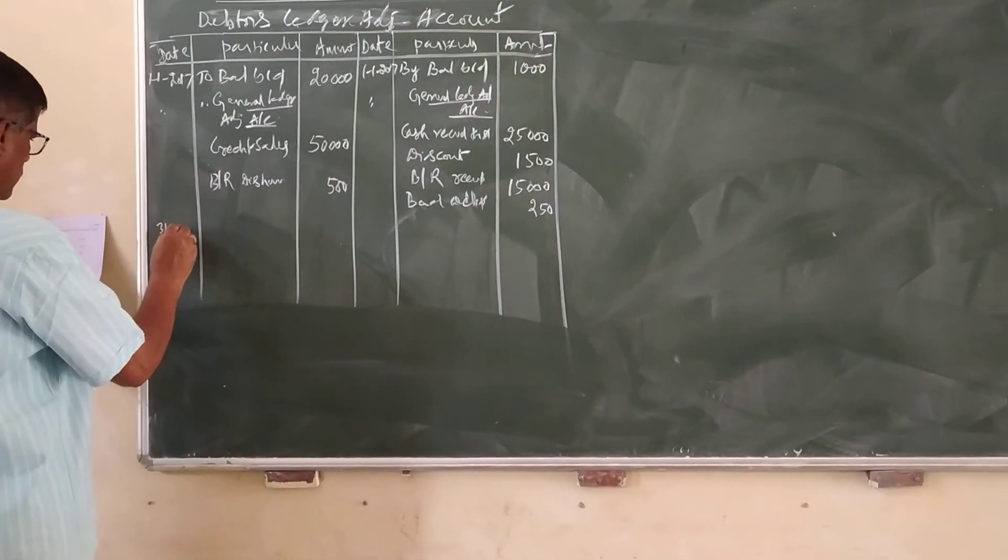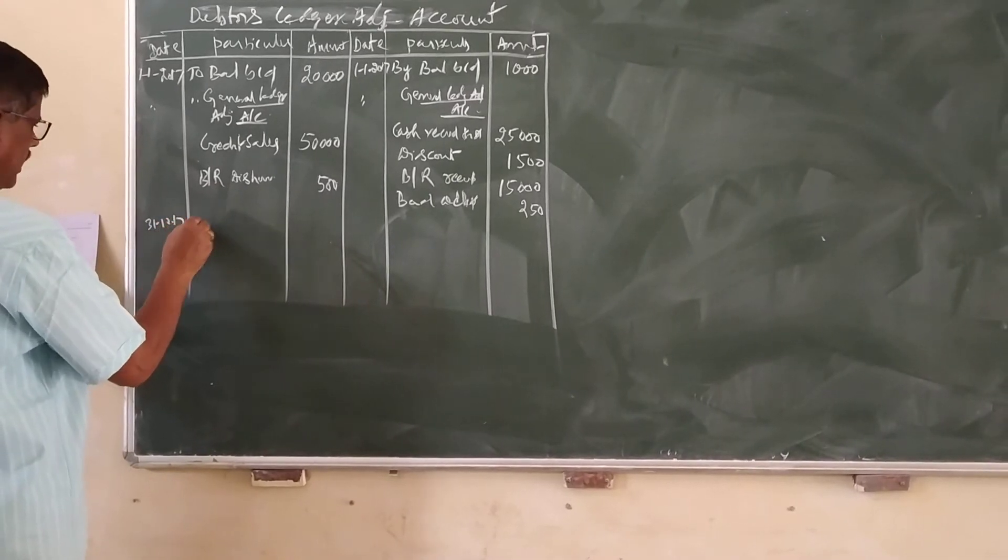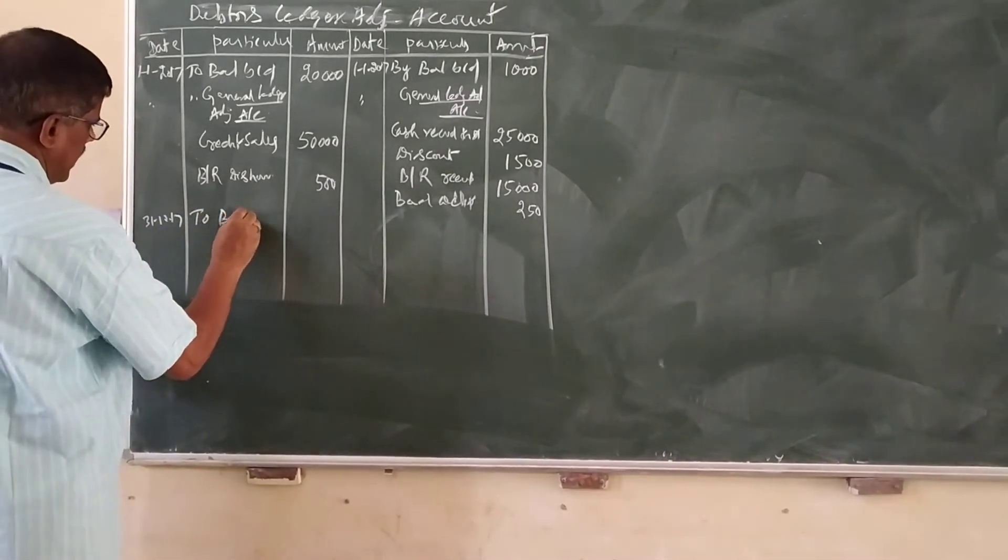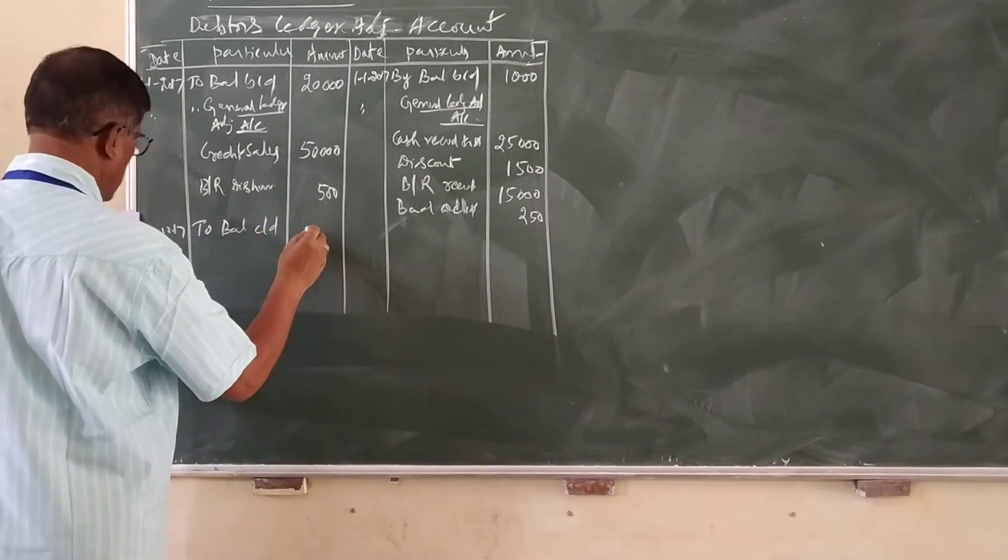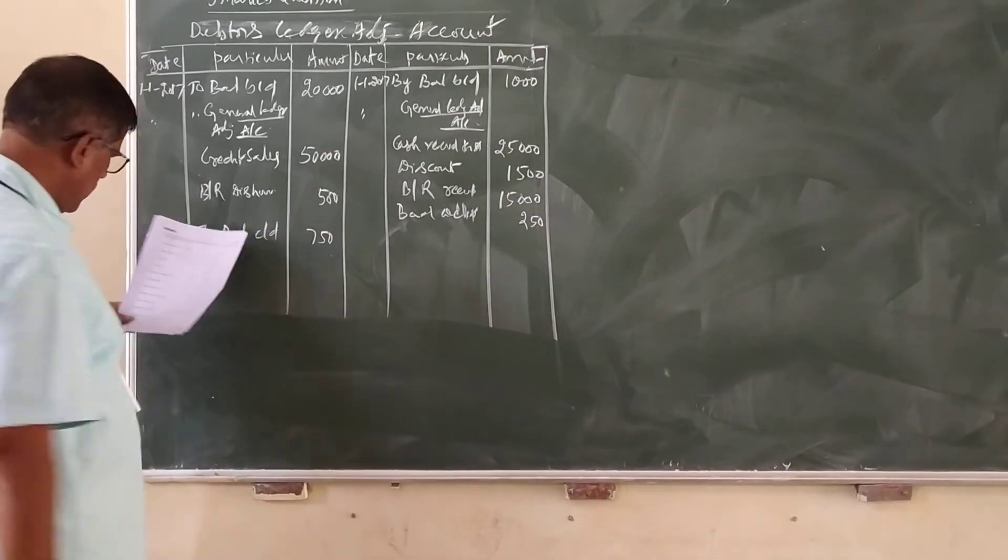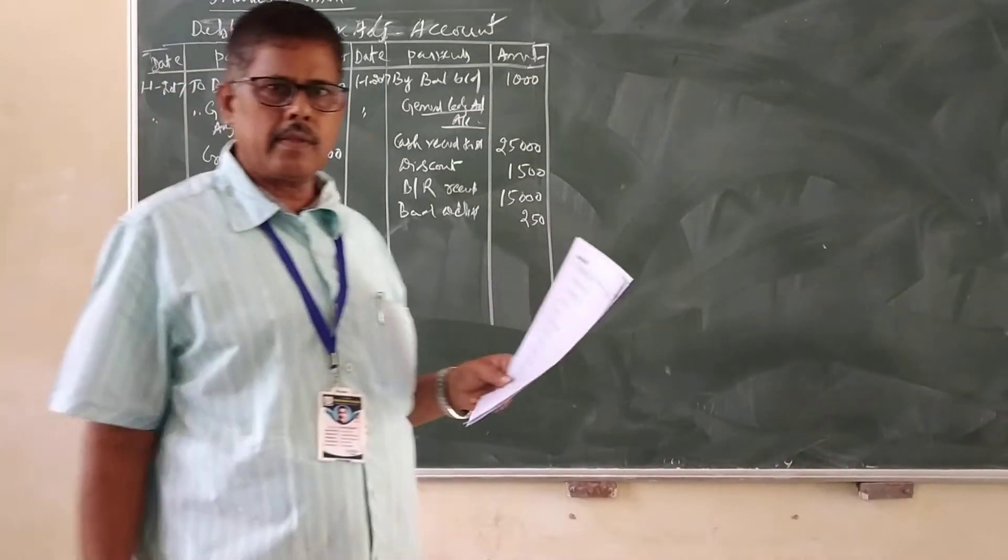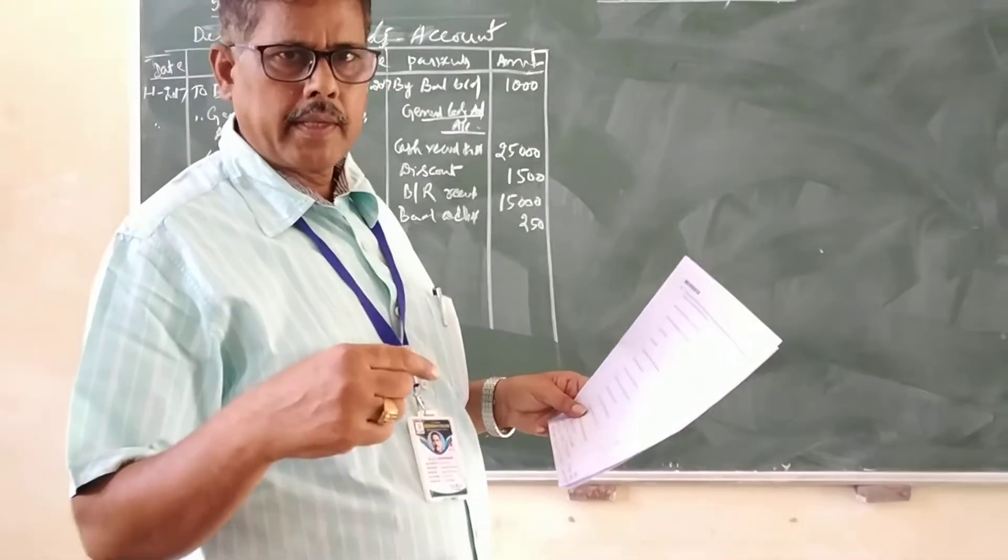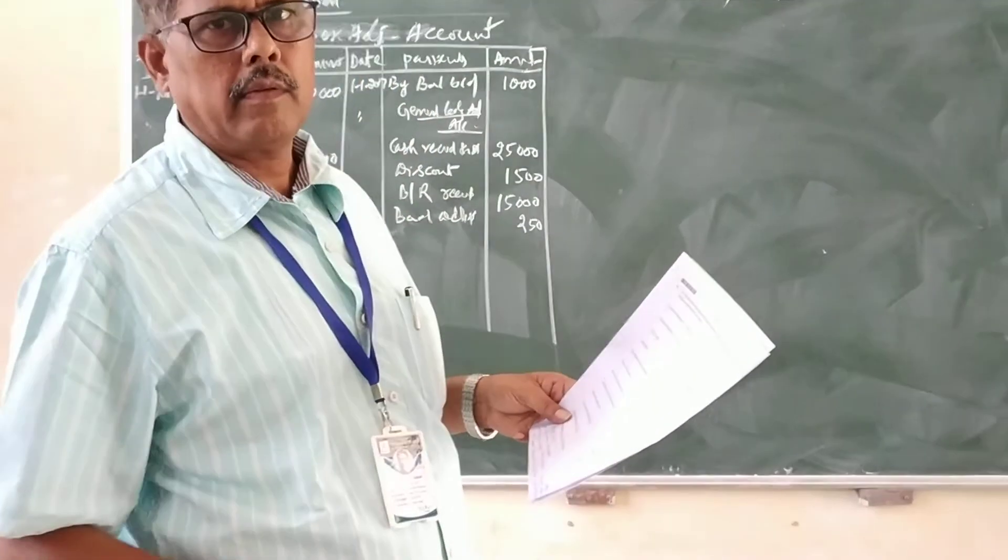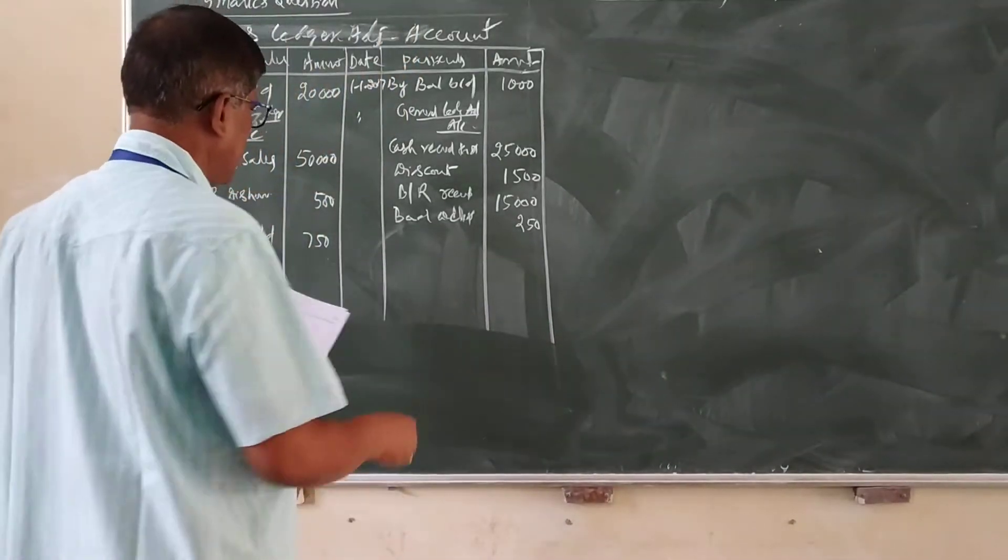31-12-2017, to balance c/d 7,000. Credit balance means first you enter on the debit side, then it is transferred to credit side. That is the procedure, 7,000.